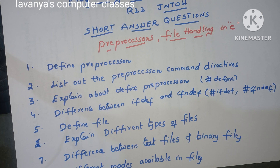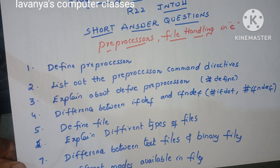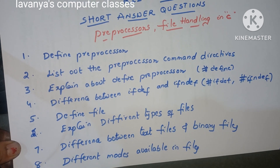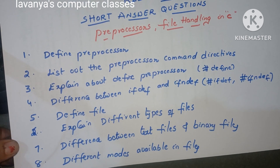First question is define preprocessor — what is a preprocessor, just the definition of preprocessor. Second question is list out the preprocessor command directives — give some examples for preprocessor directives, or which symbols are used for preprocessor directives. Third question is explain about the define preprocessor.